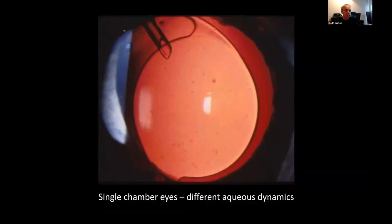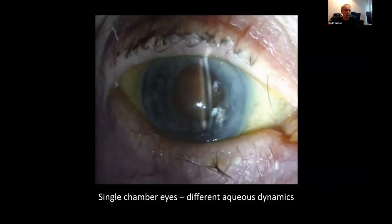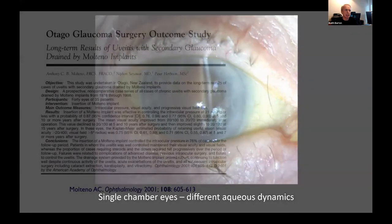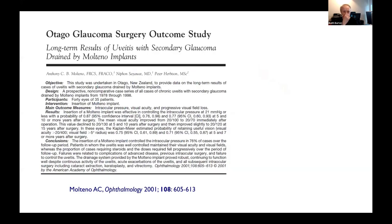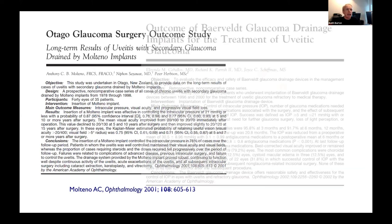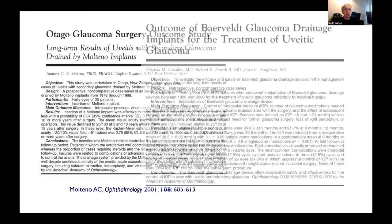It's worth remembering that these eyes all have different aqueous dynamics and need to be treated differently. Tubes have long been known to do well in uveitic patients — Tony Molteno showed that with his 15-year follow-up study, and Rich Parish showed it with the Baerveldt.